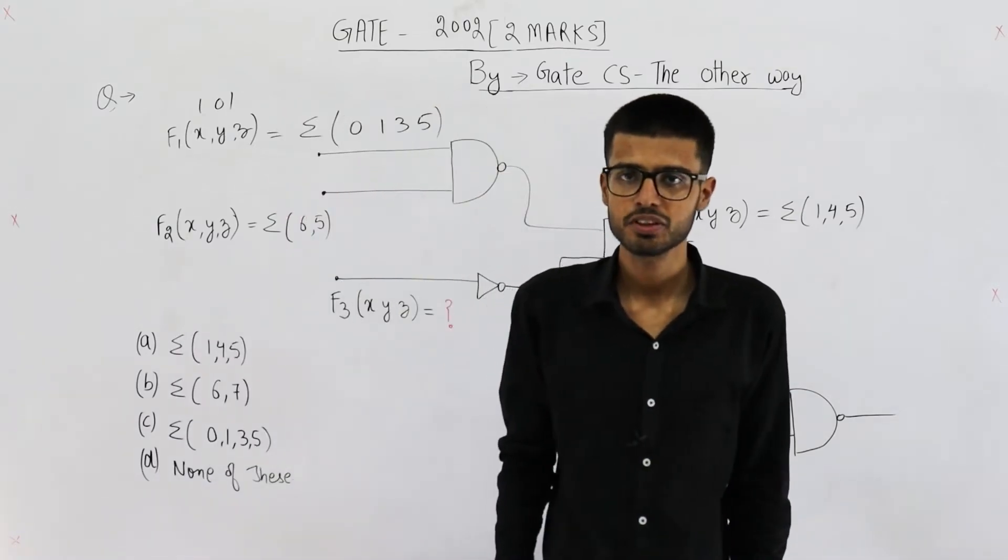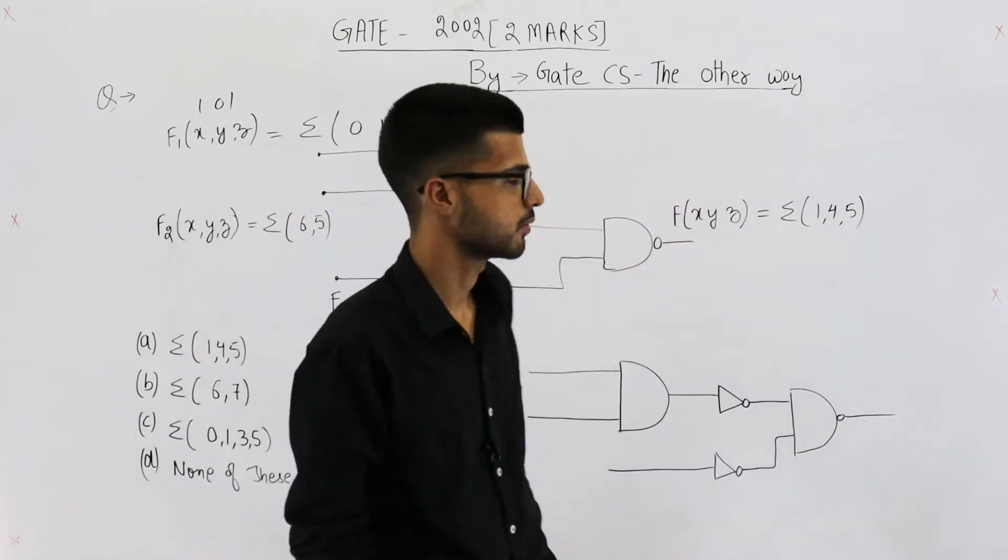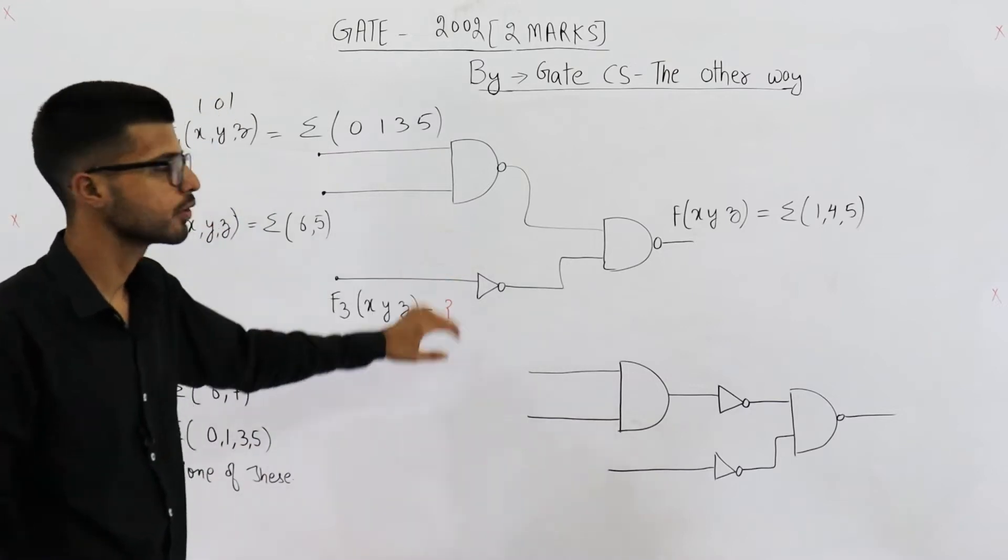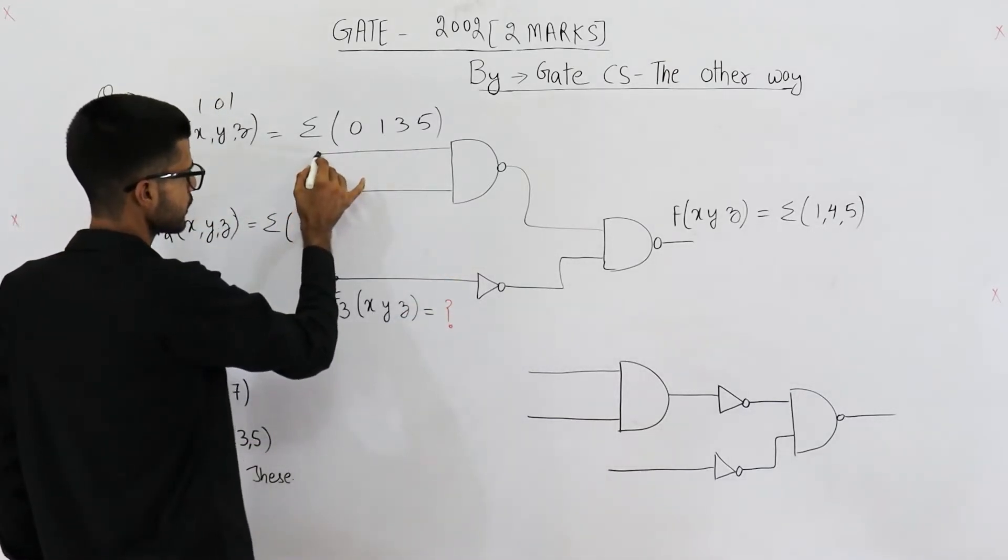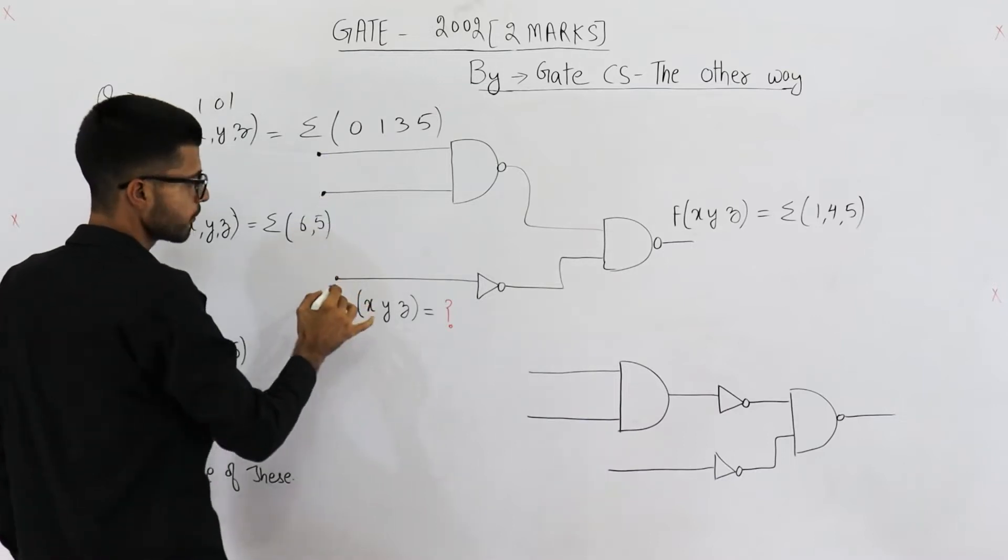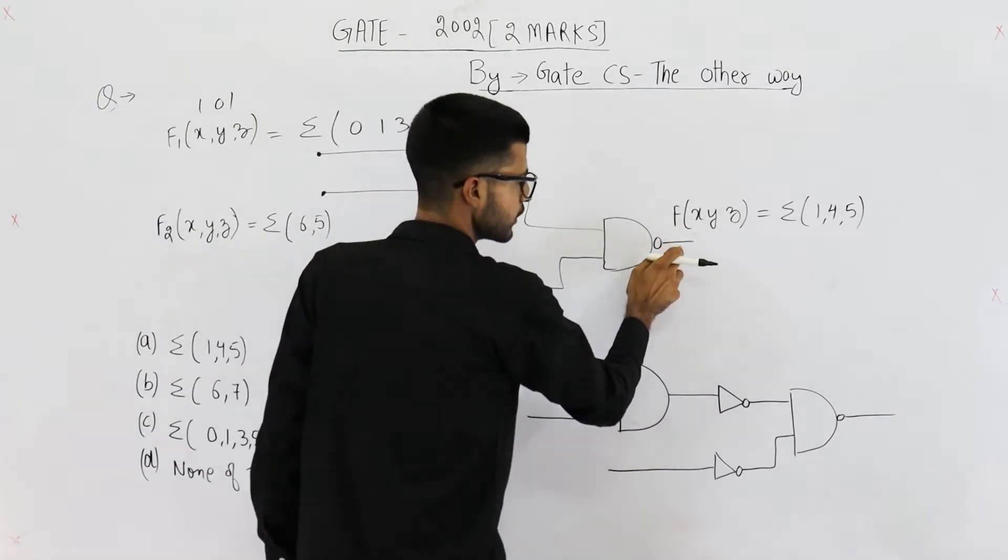Hello people, welcome back. This is a question from GATE 2010 exam, it's for two marks. They have given you this circuit in the question. Also, they have specified these three functions f1, f2, and function f.